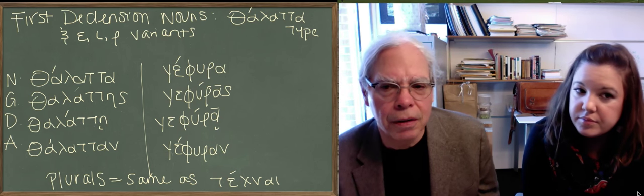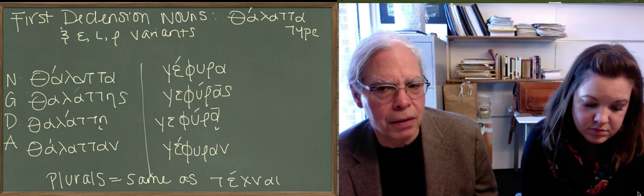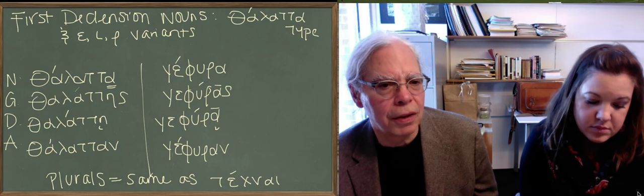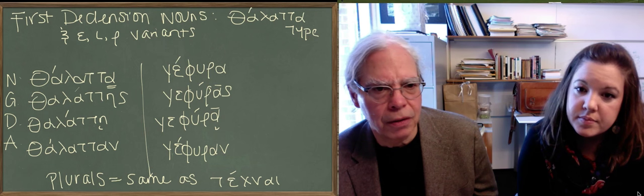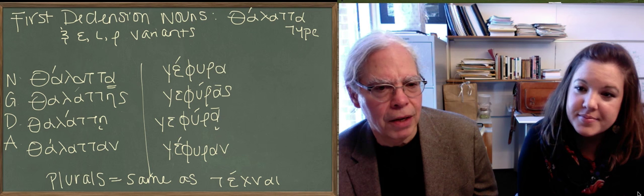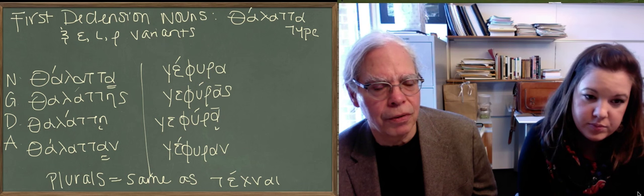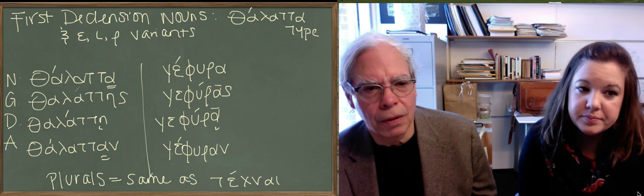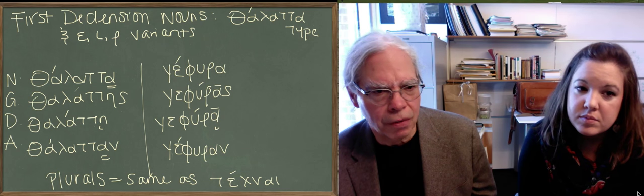So let's look at thalata. The first thing to notice is that you've got an accent on the third to the last syllable in thalata, because that alpha there is a short alpha. Couldn't be there otherwise. This is a key aspect that differentiates it from the techne type. The other form that has the short alpha is the accusative singular thalatan. The genitive and the dative, however, are just like techne. So we have, this is our new type, the distinctions are significant but not huge.